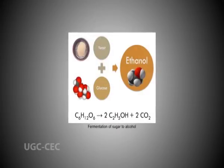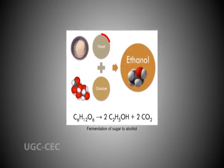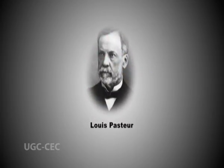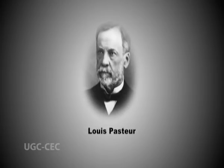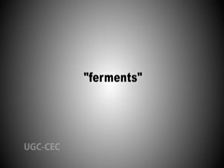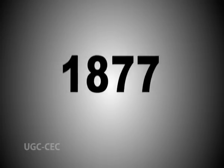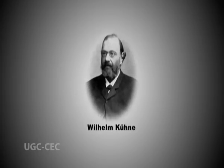A few decades later, when studying the fermentation of sugar to alcohol by yeast, Louis Pasteur concluded that this fermentation was carried out by a vital force contained within the yeast cells called fermins, which were thought to function only within living organisms. In 1877, German physiologist William Kühne first used the term enzyme, which comes from the Greek word, to describe this process.